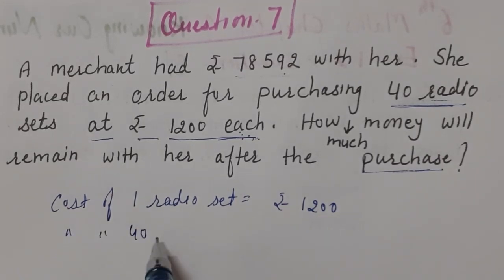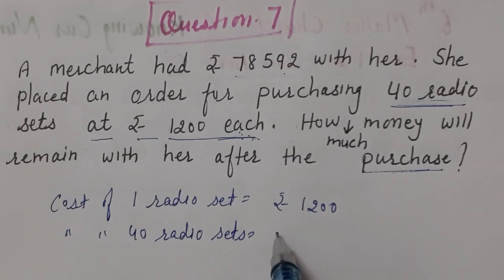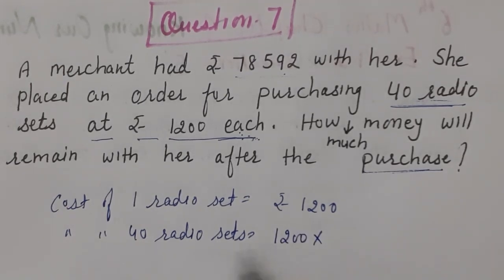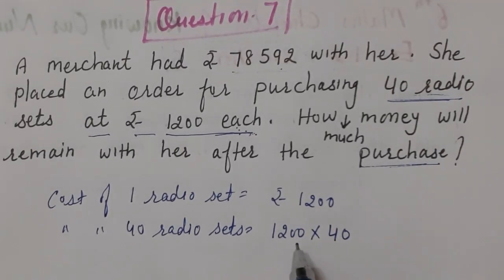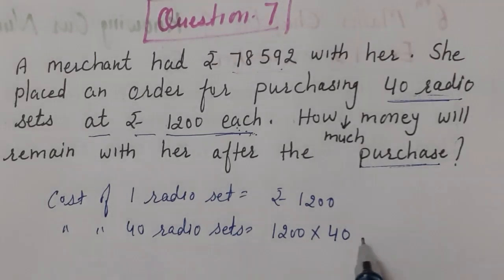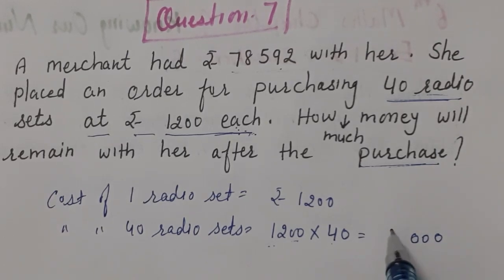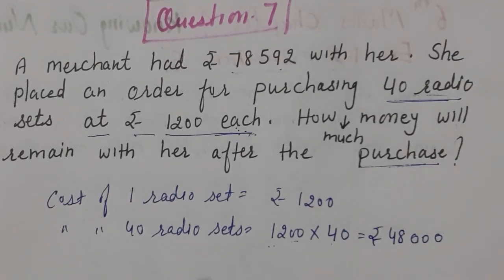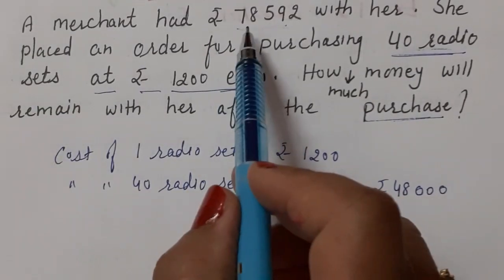If one radio set costs ₹1,200 and we need the cost of 40 radio sets, we multiply since we need more than one. Multiplying 1,200 by 40: since there are zeros in both numbers, we write three zeros as-is and multiply 12 by 4, which gives 48. So the cost of 40 radio sets is ₹48,000.